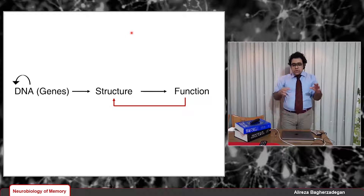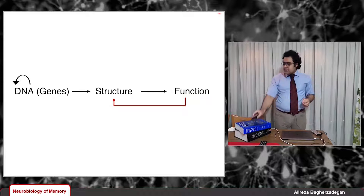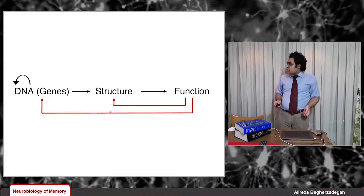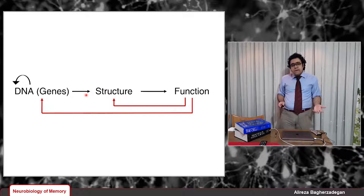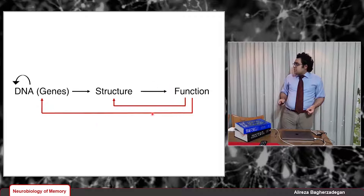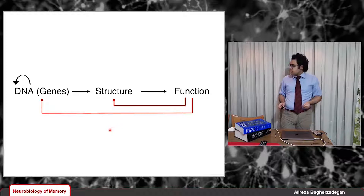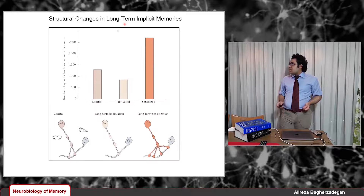As we saw in the previous lecture, I explained the alterations in gene expression as a result of long-term facilitation. We know that function sometimes can have effects on genes and can change gene expression. So the brain follows this linear pathway, but it's not always linear — we have some loops. This is a very fundamental concept in understanding how our brains work, and I wanted to point it out before talking about structural changes in sensitization and habituation.